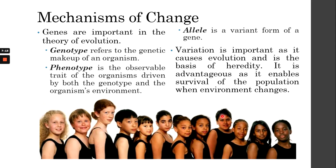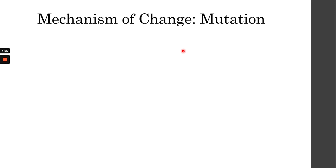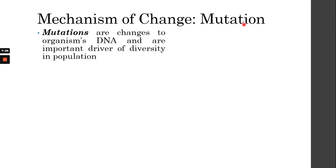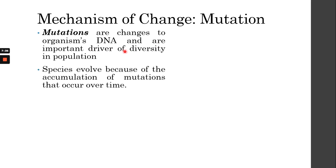The first mechanism of evolution is mutation. Mutation is basically the changes in an organism's DNA, and it is a driver for diversity in the population. Some species evolve because of the accumulation of mutations that occur over time. Some mutations are not very dangerous — some can be harmless — and what happens is those mutations accumulate over a long period of time, resulting in the evolution of the species.